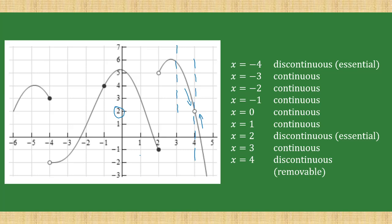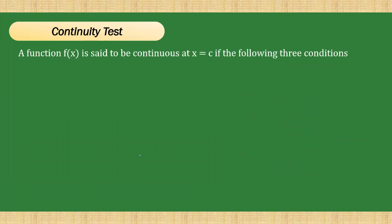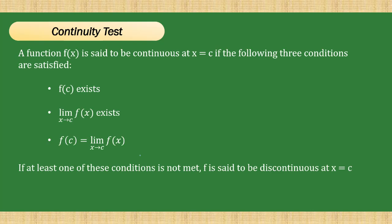We also have an alternative if you don't have the graph of the function — we will call this the continuity test. In order for the function to be continuous at x equals c, it should meet the following conditions: first, the actual value f of c exists; second, the limit of f of x as x approaches c exists; and third, the two previous answers should be equal. If at least one condition is not met, then the function is automatically discontinuous.